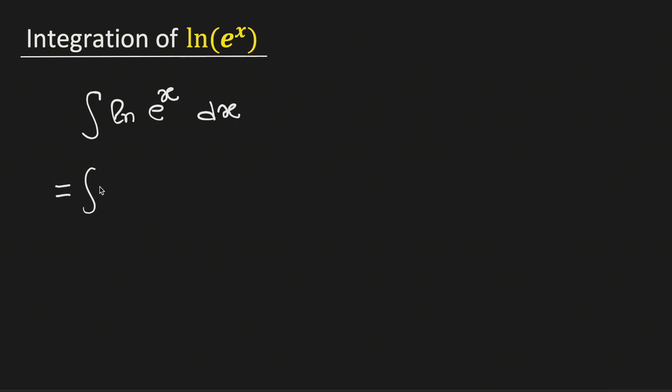We know that ln is same as the logarithm with base e. Using the properties of logarithms, log b to the k with base a is same as k times logarithm of b with base a.